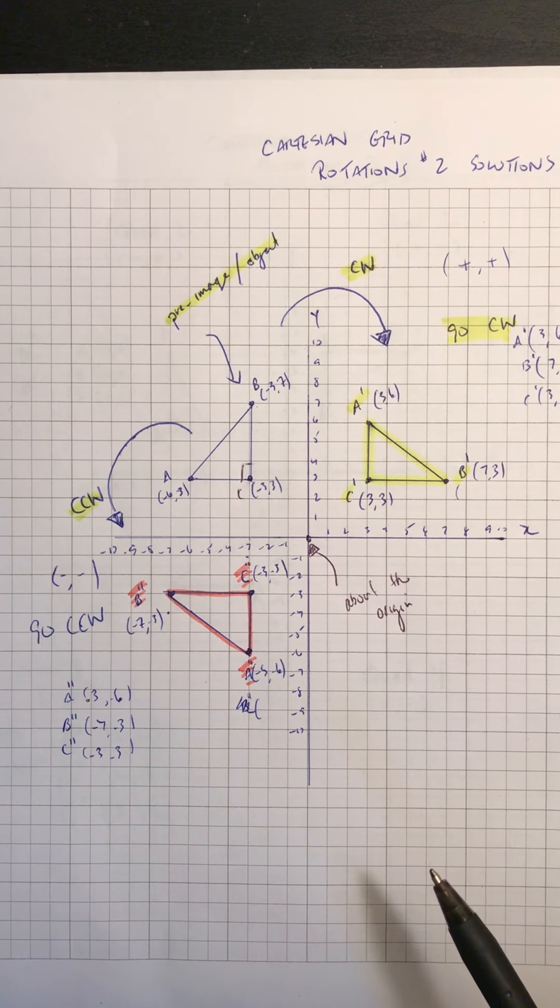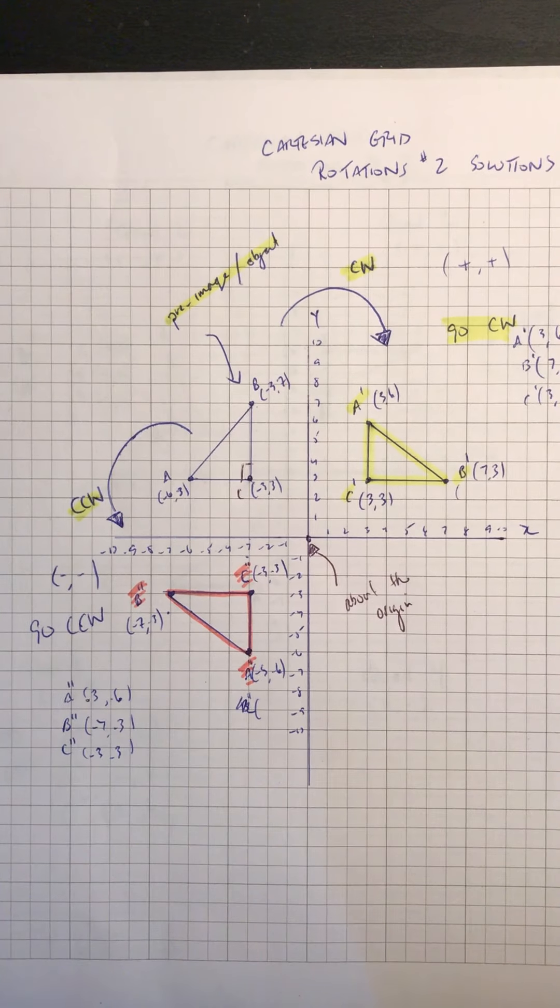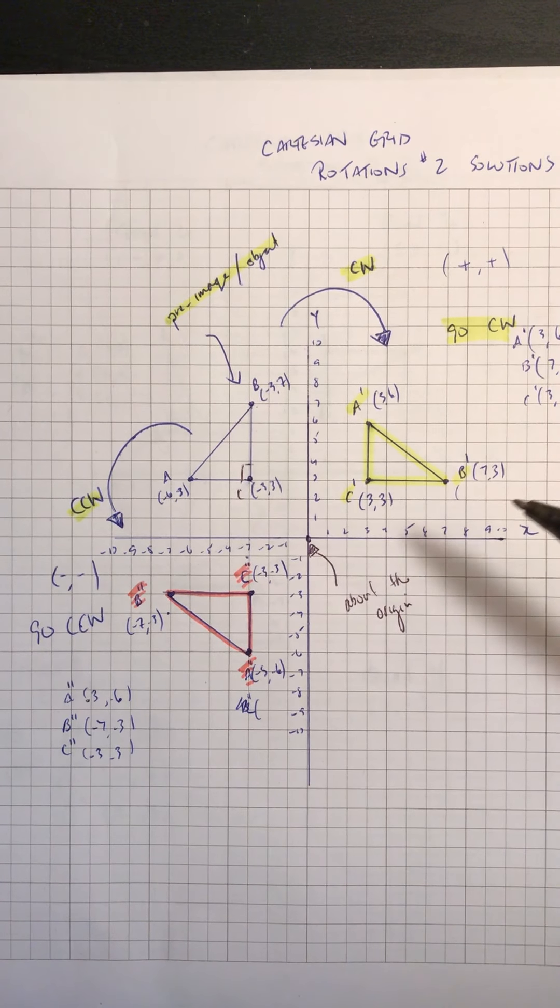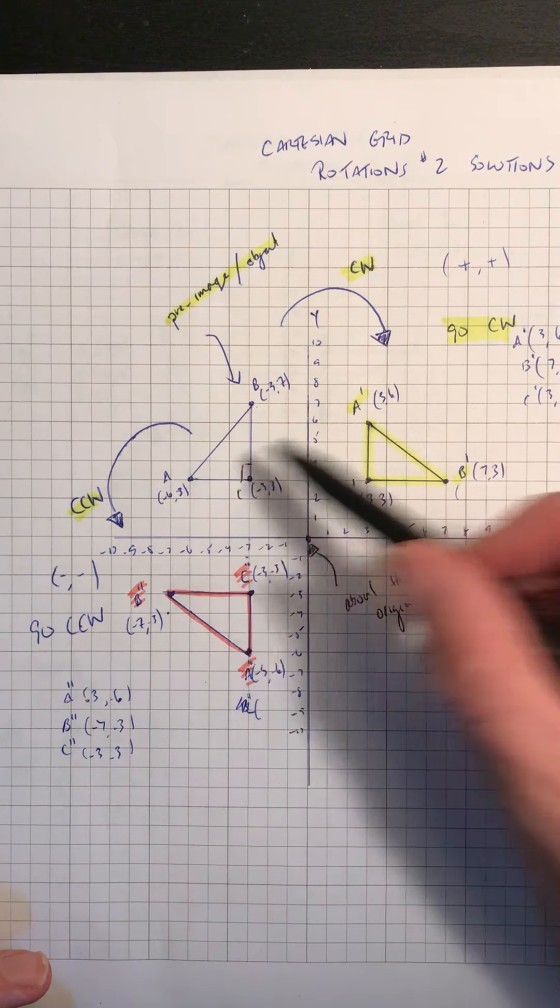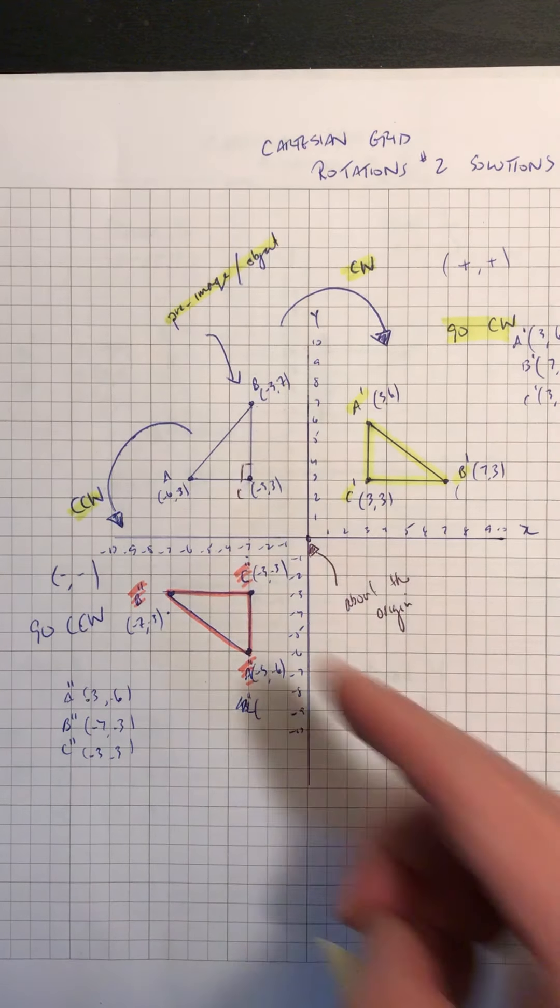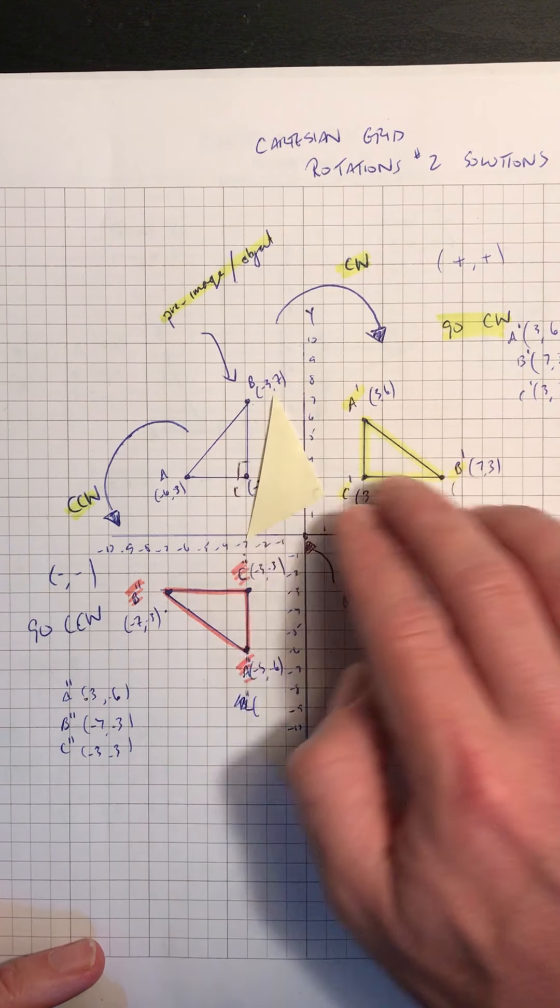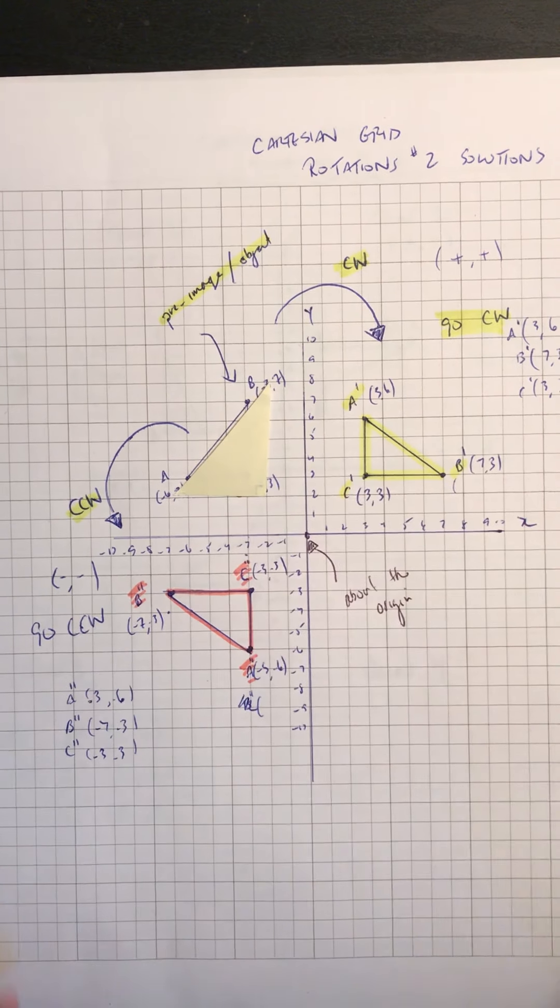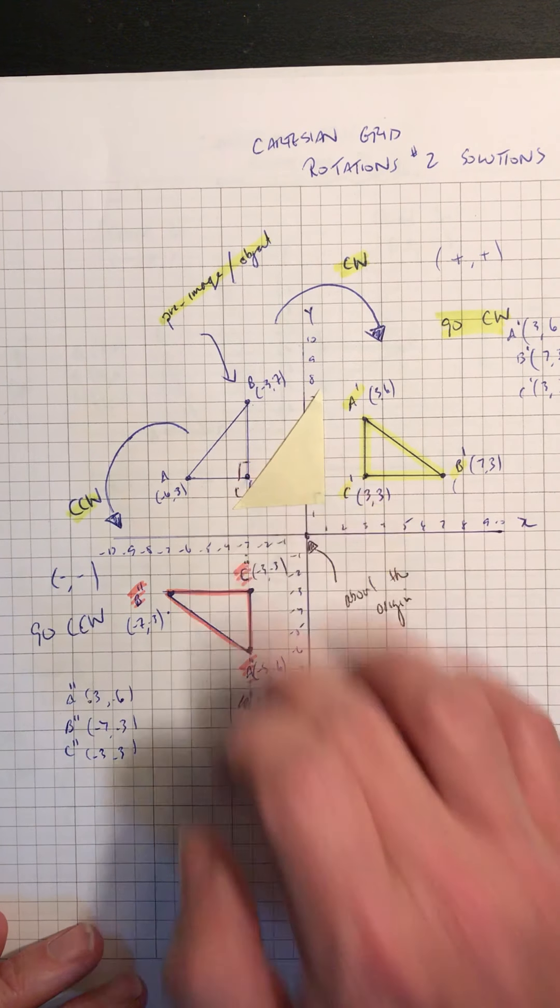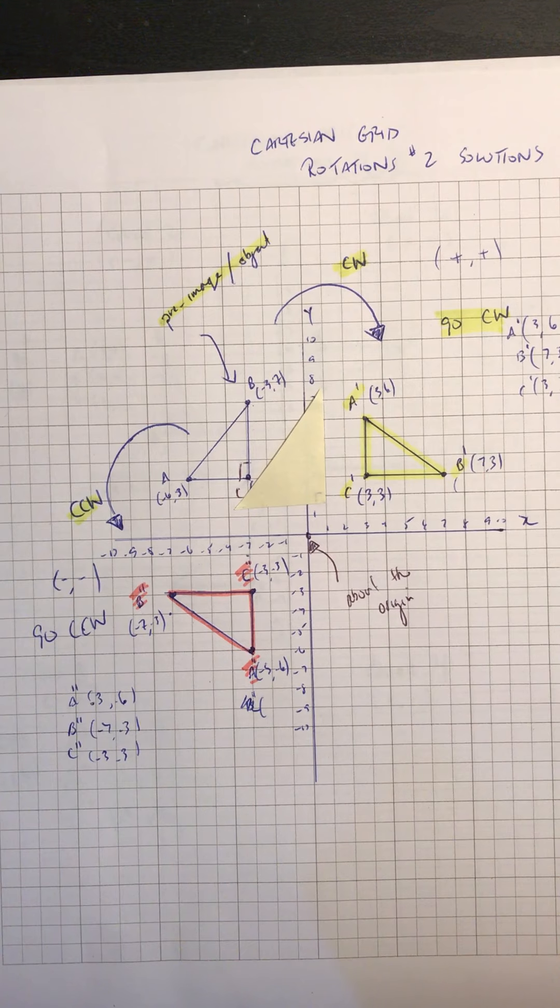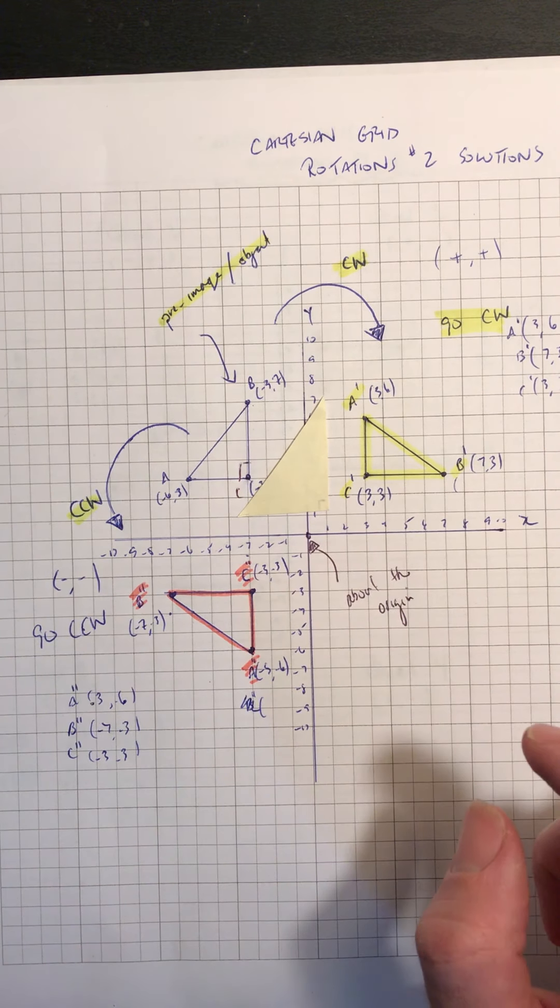Tomorrow there's going to be a lesson posted, probably the last one of the week, on what do we do when we have a shape that is in a couple of quadrants. So what we'll do is maybe take our triangle here, and then instead of having it in one quadrant fully, we're going to move this over and then we're going to see what happens. How do we have to deal with that? So that would be rotations three.